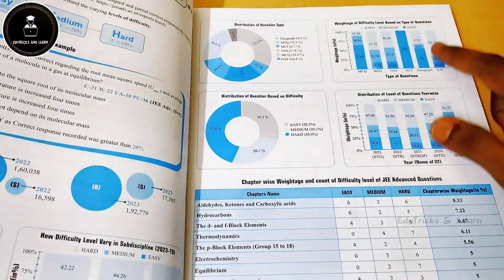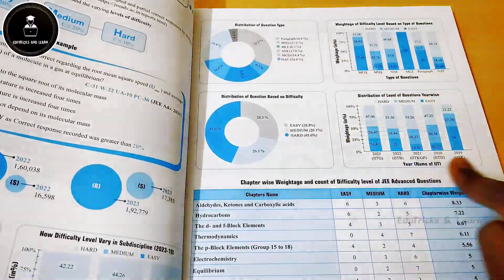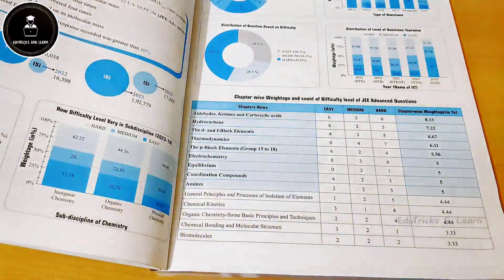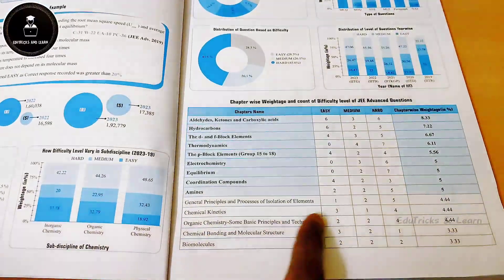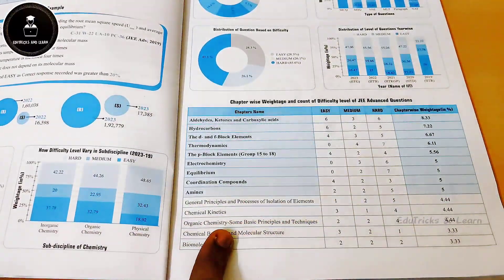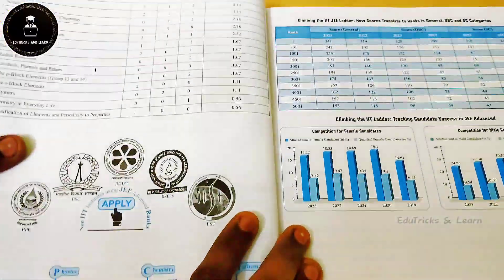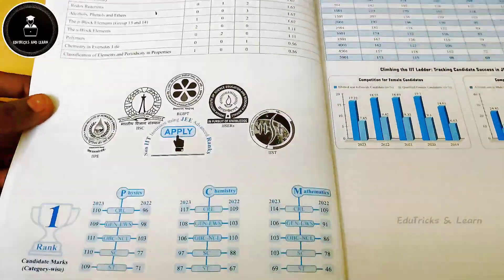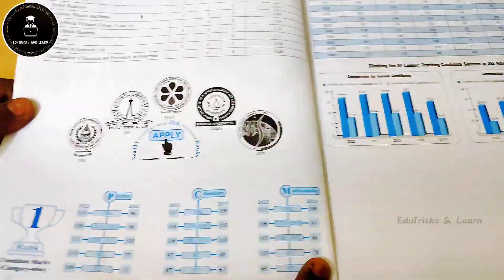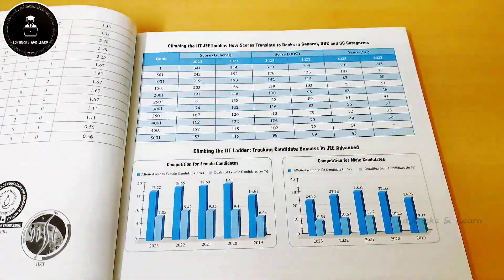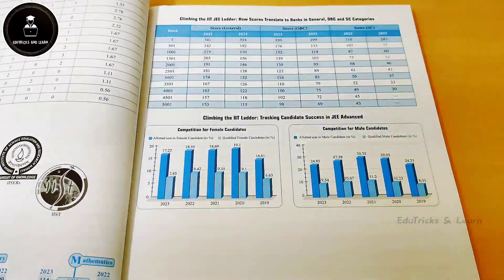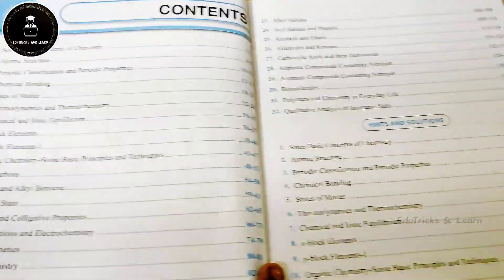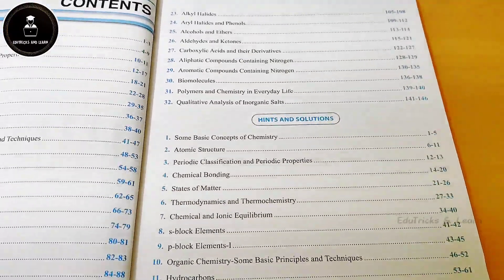They have given chapter-wise weightage and count of difficult questions asked in previous years. For example, in one chapter they may have asked seven easy questions, two medium questions, and five hard questions. They have also given the category reservation cutoff marks for IIT JEE Advanced, giving a completely analytic view of JEE Advanced Chemistry. The content lists 32 chapters, and hints and solutions are given at the back of the book itself.